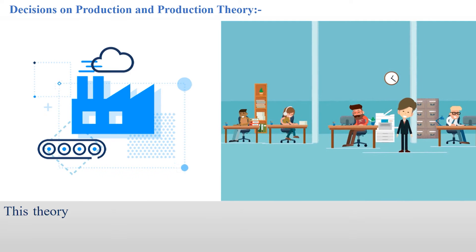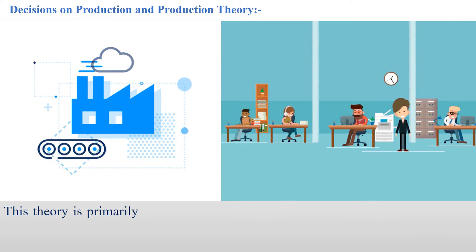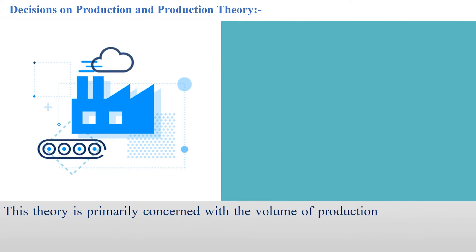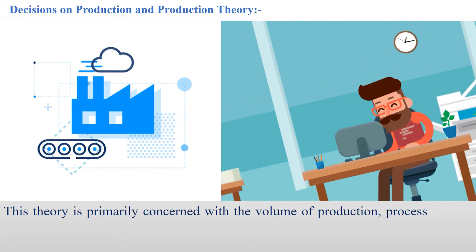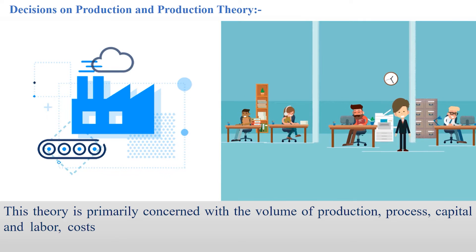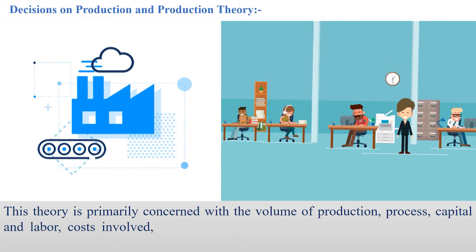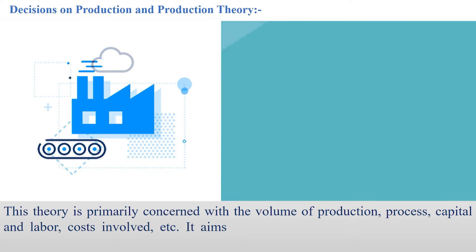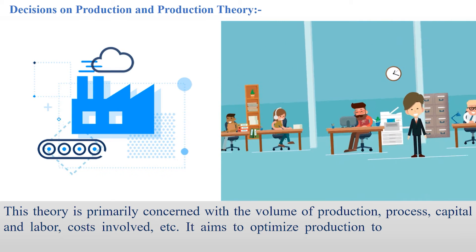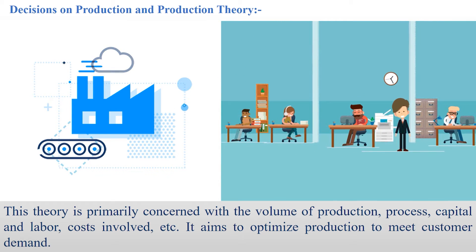Decisions on production theory. This theory is primarily concerned with the volume of production, process, capital and labor, costs involved, etc. It aims to optimize production to meet customer demand.